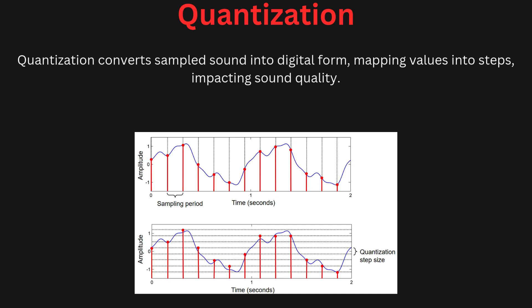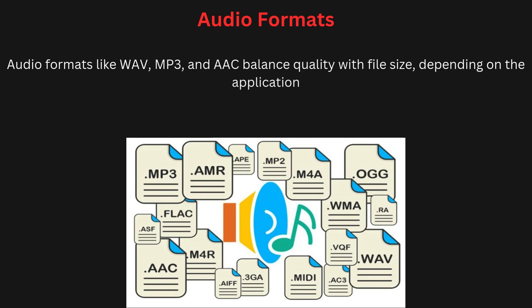There are various formats used to store digital audio, each with its advantages and disadvantages. Common formats include WAV, MP3, and AAC. WAV files are uncompressed and offer the highest quality but require more storage space. MP3 and AAC are compressed formats that reduce file size by removing parts of the sound less audible to the human ear, while still maintaining good audio quality. Choosing the right format depends on the balance between quality and file size needed for the multimedia project.